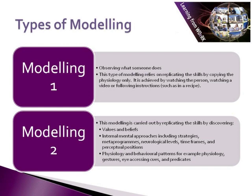There are two ways of modelling excellence wherever you find it. Firstly, you can observe what the person does. This type of modelling relies on watching what the person is doing and copying it. It relies on what you can see and hear.